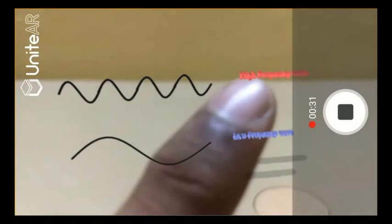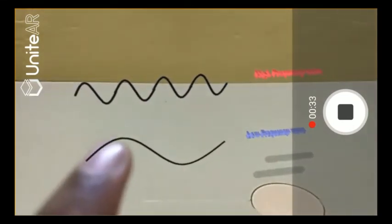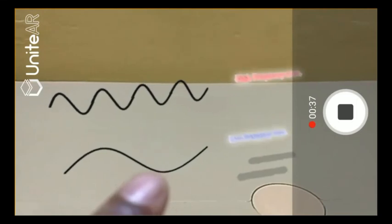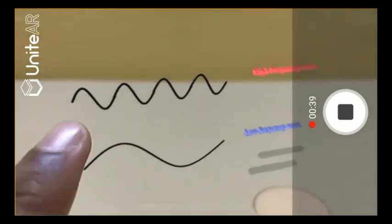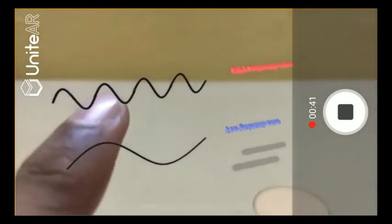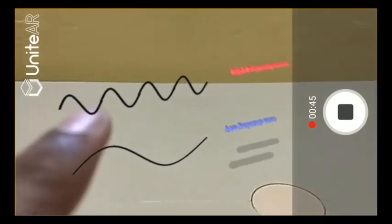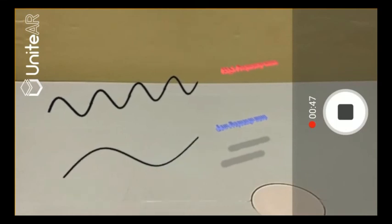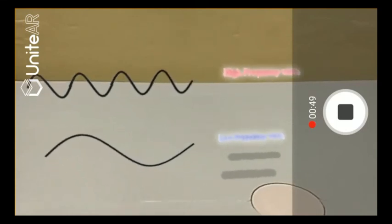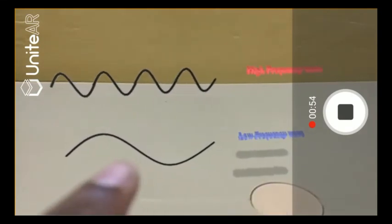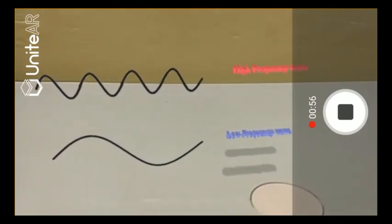In contrast, the high frequency wave completes four oscillations in one second, meaning it has a frequency of four hertz. And as you can observe, the wavelength has reduced. So this proves the fact that as the frequency increases, the wavelength decreases, and they are inversely proportional to each other. But no matter how fast is the frequency or how low a frequency, they still end up traveling at the same speed, which is the speed of sound.